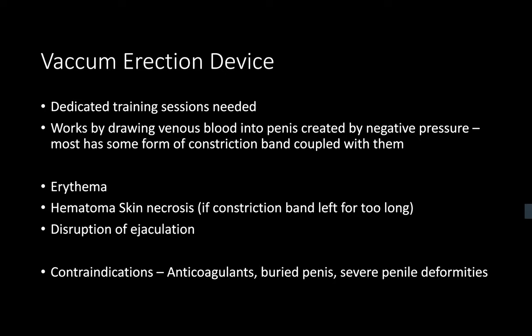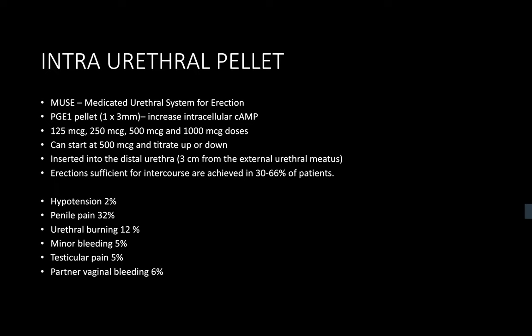Moving on to intraurethral pellets — can you tell me more about them? This is a form of alprostadil with a dose of between 500 to 1,000 micrograms. It involves delivery of a pellet into the urethra, which needs to be massaged throughout the shaft. The expected time of onset of an erection is up to 15 minutes, and the efficacy is approximately 66%.